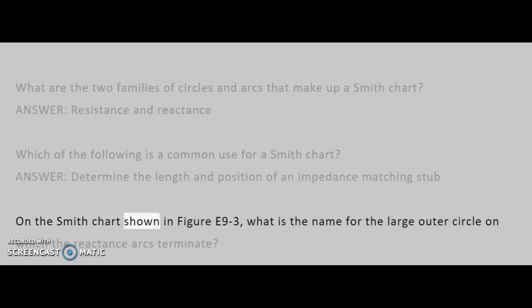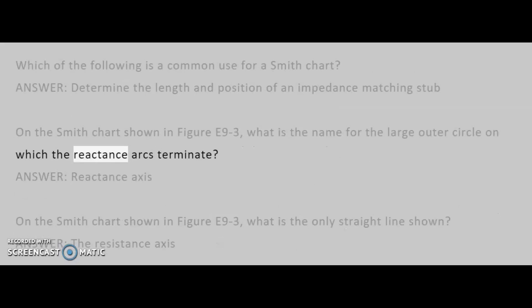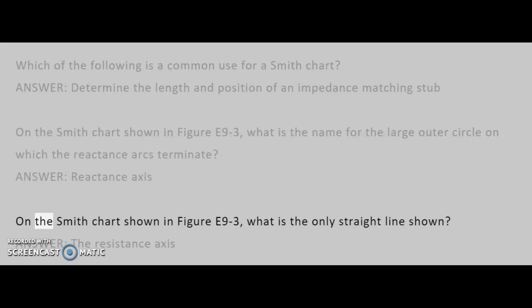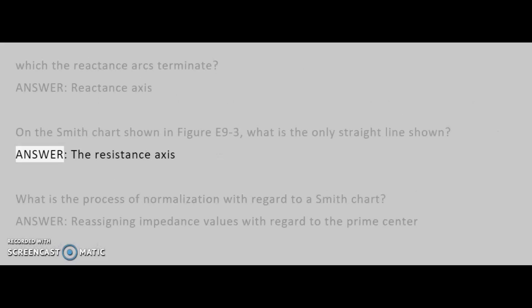On the Smith chart shown in figure E9-3, what is the name for the large outer circle on which the reactance arcs terminate? Answer: Reactance axis. On the Smith chart shown in figure E9-3, what is the only straight line shown? Answer: The resistance axis.